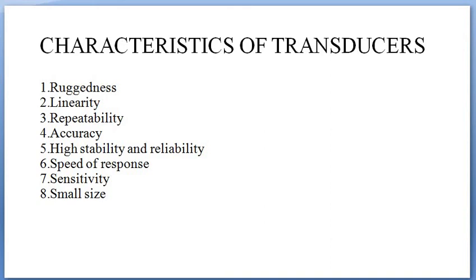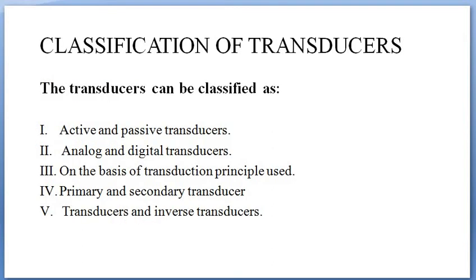Next, let us move on to the classification of transducers. There are five different classification types: first, active and passive transducers; second, analog and digital transducers; third, classification based on transduction principle; fourth, primary or secondary transducers; and fifth, ordinary transducers and inverse transducers.